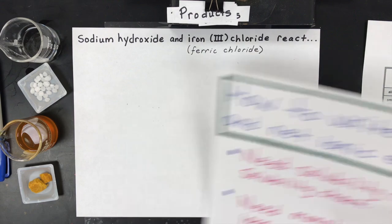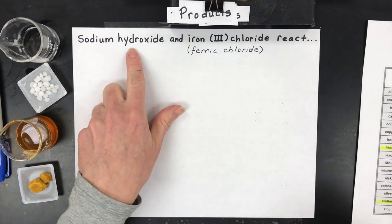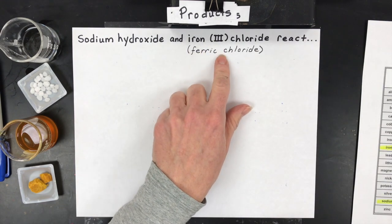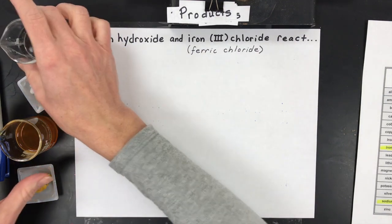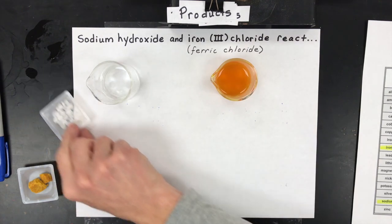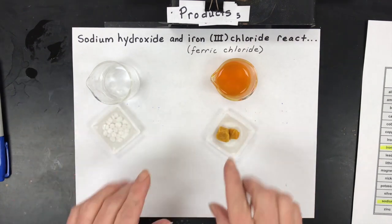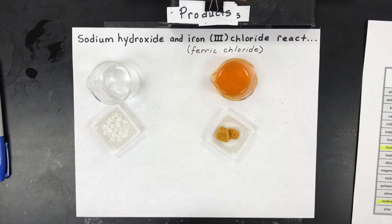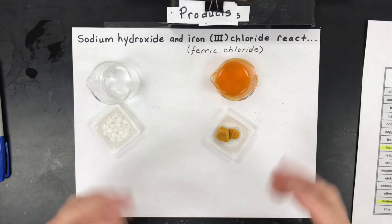Next what we're going to do today is we're going to react sodium hydroxide and iron chloride which is also called ferric chloride. I have them actually right here. I've made one into a solution and the other one into a solution and here's what they look like as solids. I'm going to react these two a little later in the video after we write the net and total ionics.